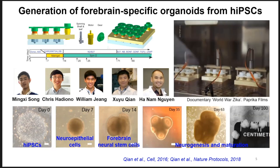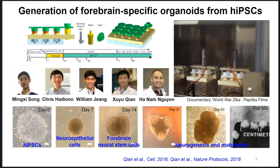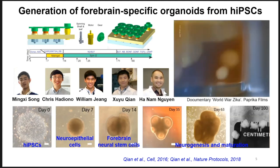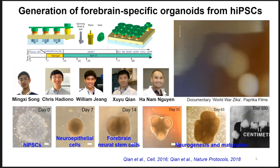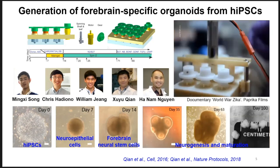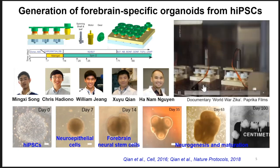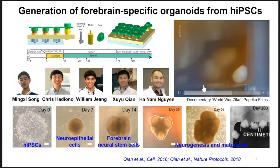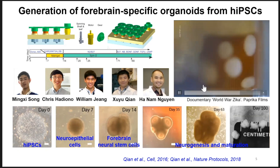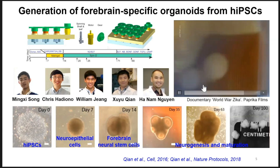We further specify neuroepithelial cells into forebrain neural stem cells or radial glial cells. After this initial two weeks of patterning, everything becomes intrinsic — the self-organization properties of these stem cells, neurogenesis, gliogenesis, and maturation are all self-organizing. By 100 days you can see these brain organoids grow quite large in size, close to half a centimeter.